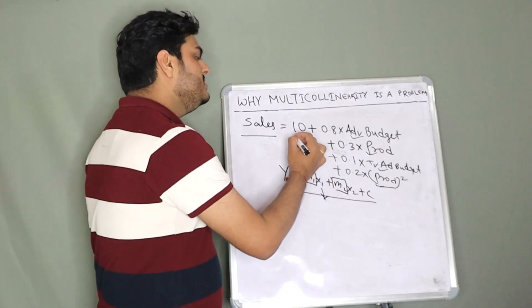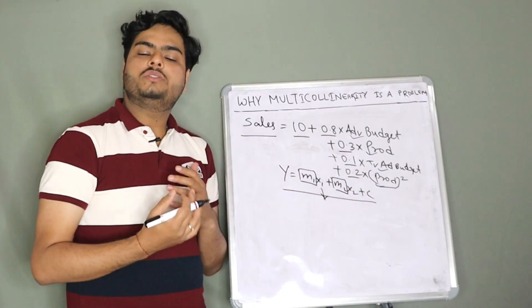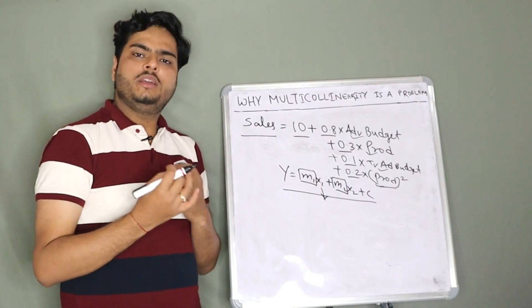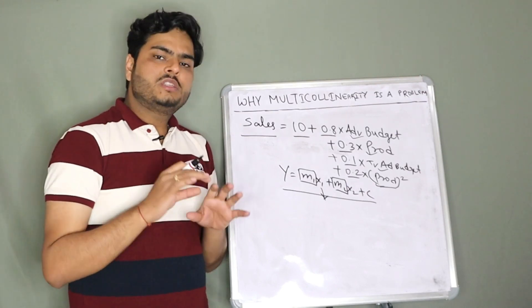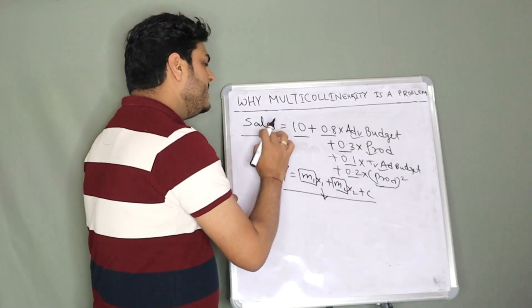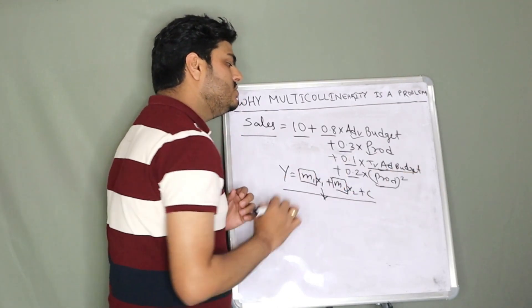Now here, see these coefficients. These coefficients have come from the linear regression model. Now, practically, from common sense, suppose I want to know how my ad budget is impacting sales. And there is TV ad budget also in the data.